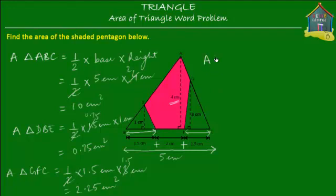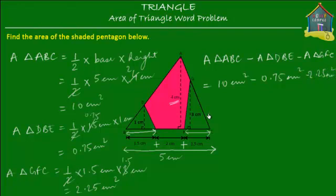So here is what we have to do now. We have the area of triangle A, B, C. And from that, we have to minus the area of triangle D, B, E and the area of triangle G, F, C. Now it's pretty straightforward calculation. 10 centimeters square minus 0.75 centimeters square minus 2.25 centimeters square. So 10 minus 0.75 is 9.25 and 9.25 minus 2.25 is 7 centimeters square. So that's it. The area of this pentagon in pink is 7 centimeters square.